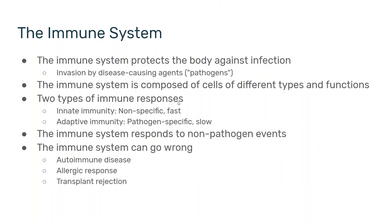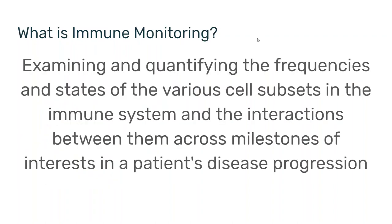This is a good segue to what is immune monitoring. My suggested definition is to examine and quantify the different subsets in the immune system and the interactions between them across milestones of interest in a patient's disease progression. This is very broad because the patient might be suffering from an infectious disease, cancer, or an autoimmune disease. When we talk about cell subsets, we can discuss their frequencies — the patient has more or fewer T cells — or their behavior, a notable example being PD-1 in the context of cancer immunotherapy.